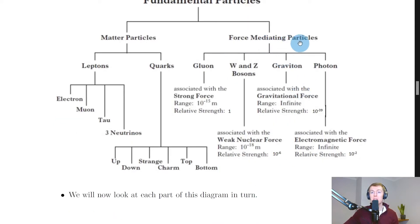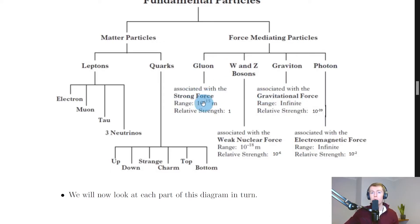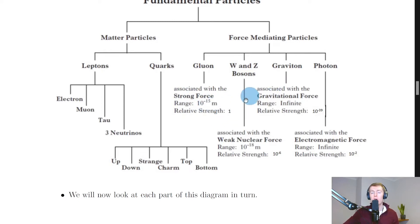On the other side we have our force mediating particles — four of these: the gluon, W and Z bosons, graviton, and photon. Each force mediating particle is associated with a fundamental force of nature: the strong nuclear force, the weak nuclear force, the gravitational force, and the electromagnetic force. The gluon is associated with the strong nuclear force and has a range of about 10 to the minus 15 meters and a relative strength of one — all other forces are compared relative to this.